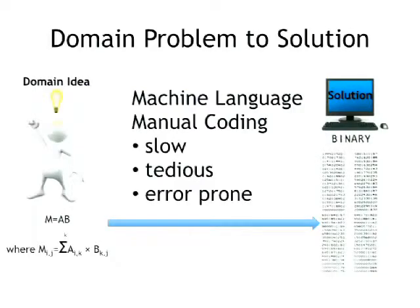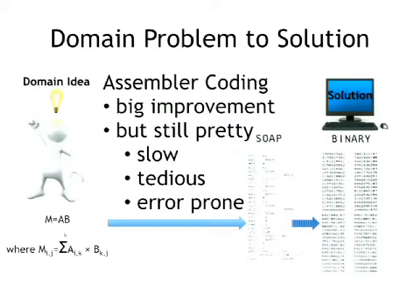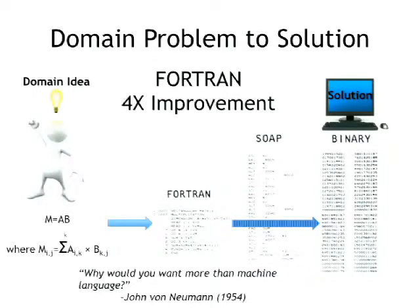Let's look at how we got from the beginning. You had a domain problem — how do I multiply these two matrices? That was translated into machine language: very slow, tedious, and error-prone. Very quickly, they came up with assembly code — symbolic ways of representing the instructions. SOAP is one of the early assembly languages, doing pretty much a one-to-one translation. That made it a lot better, but it was still slow, tedious, and error-prone.